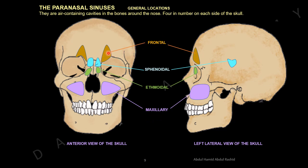Frontal sinuses are inside the frontal bone, one on each side, above the supra-orbital margins of the orbital cavity. Sphenoidal sinuses are deep inside the skull in the body of the sphenoid bone. Ethmoidal sinuses are in the lateral mass of the ethmoid bone, one on each side. Maxillary sinuses are in the body of the maxilla. Viewed from the lateral side: frontal sinus, sphenoidal sinus, ethmoidal sinuses in three groups in the lateral mass, and maxillary sinus in the body of the maxilla.